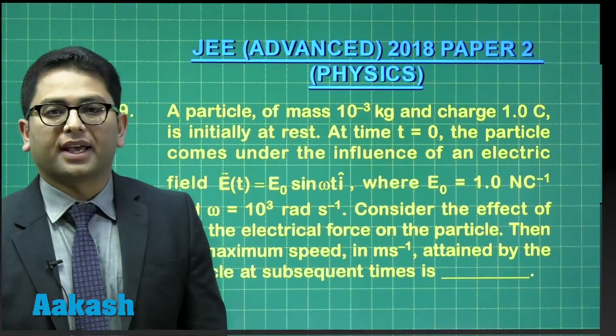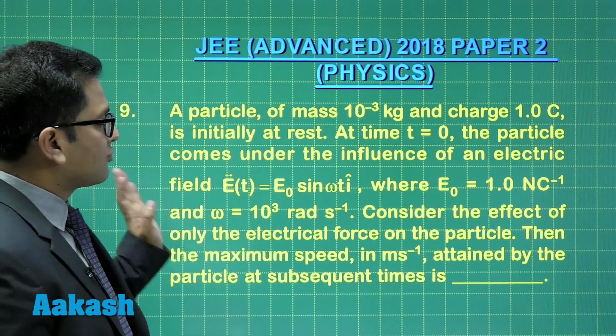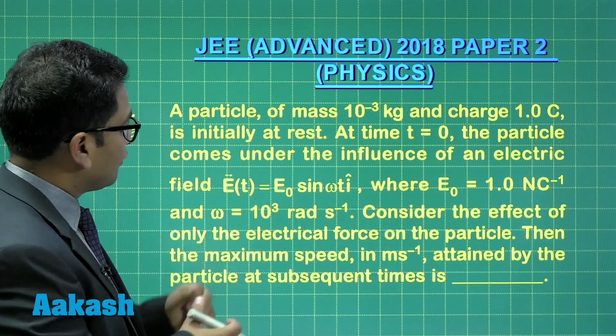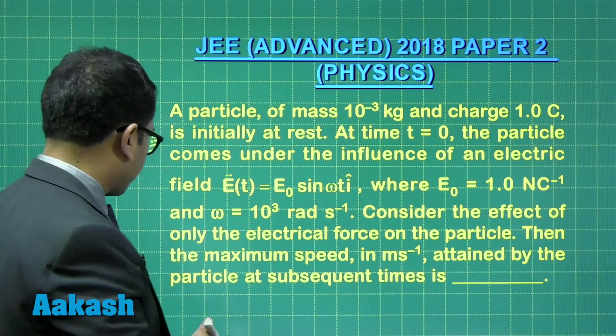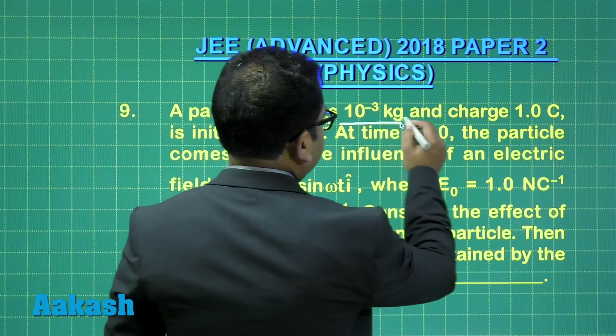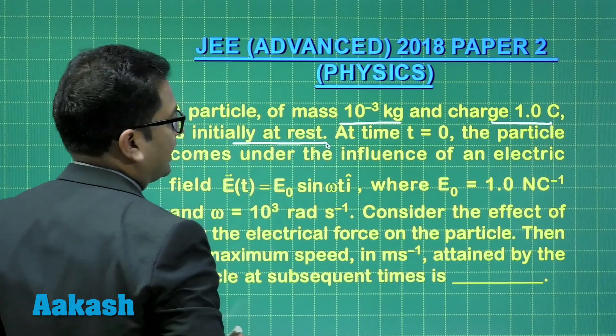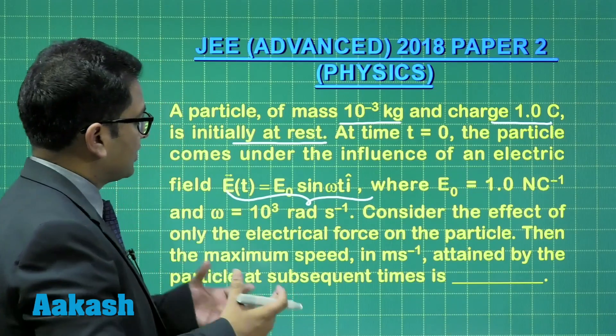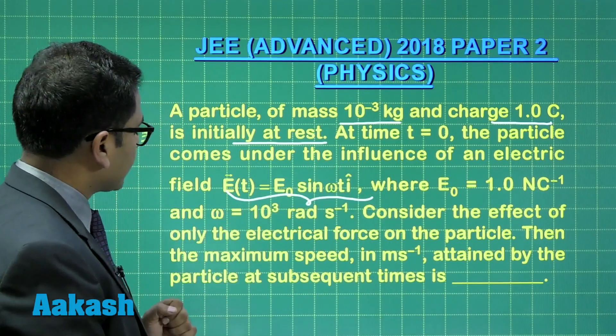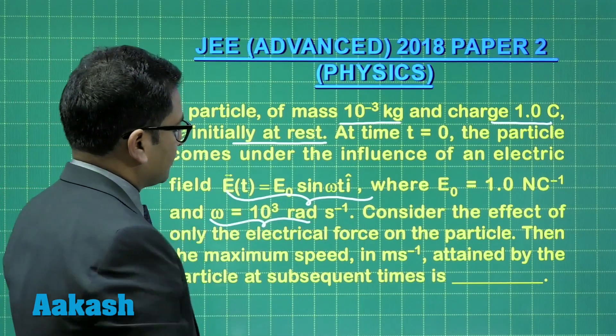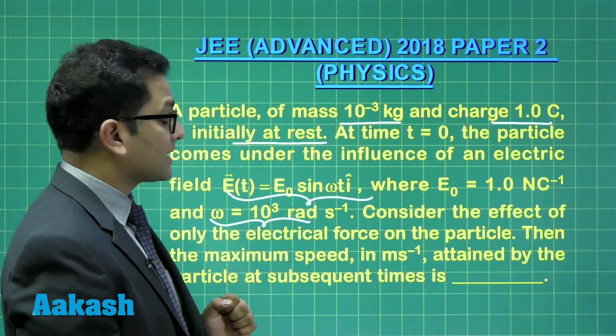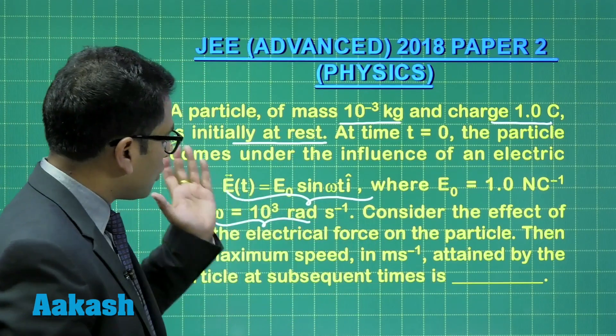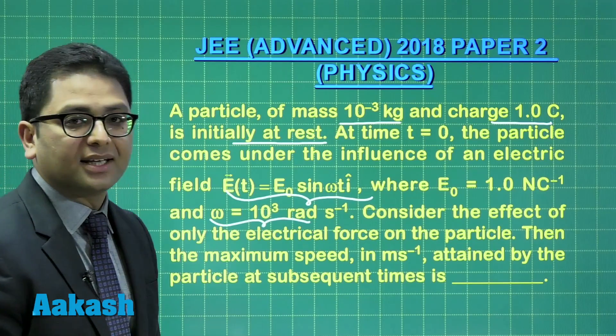Right then, let's move to question number 9. OK. Question number 9, a very straightforward question from kinematics, or you can also solve it with equal ease by comparing with the general format of simple harmonic motion. It says something like this, a particle of mass 10⁻³ kg and charge 1.0 C is initially at rest. At time t equals 0, the particle comes under the influence of this electric field E(t) = E₀ sin(ωt), where E₀ = 1.0 NC⁻¹ and ω = 10³ rad s⁻¹. So this will subsequently give us the force. Now, the force is directly proportional to sin ωt, so it's a clear indication the motion is simple harmonic.